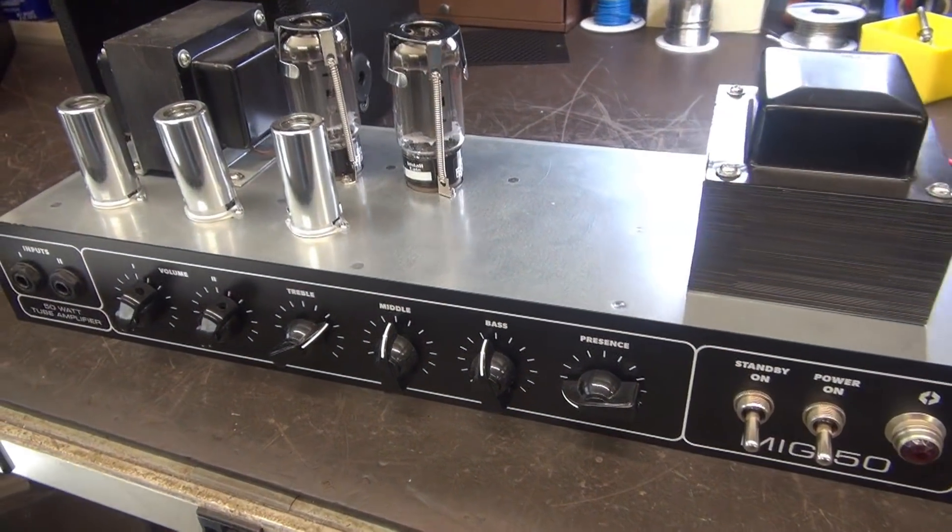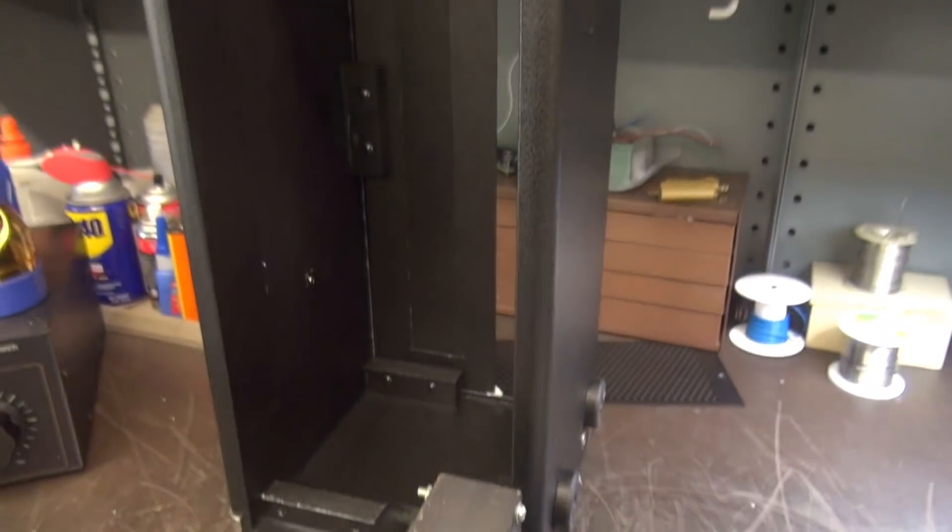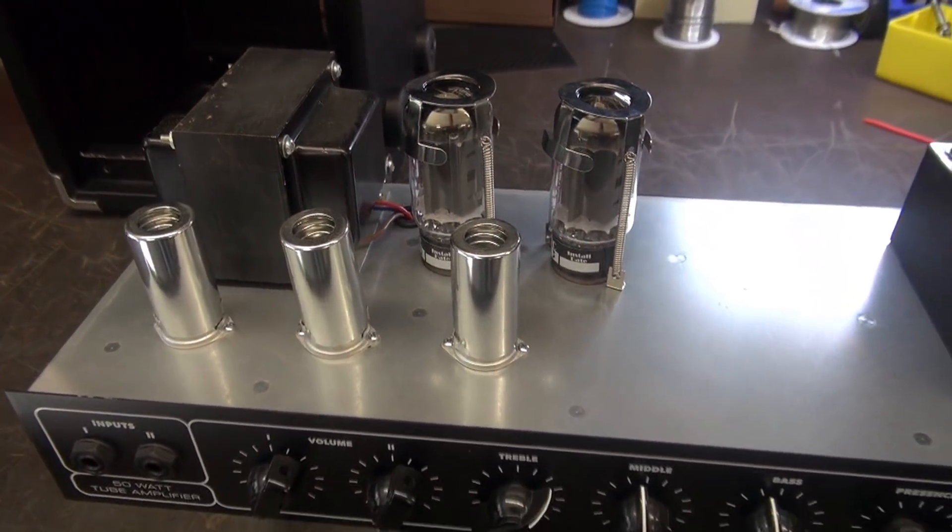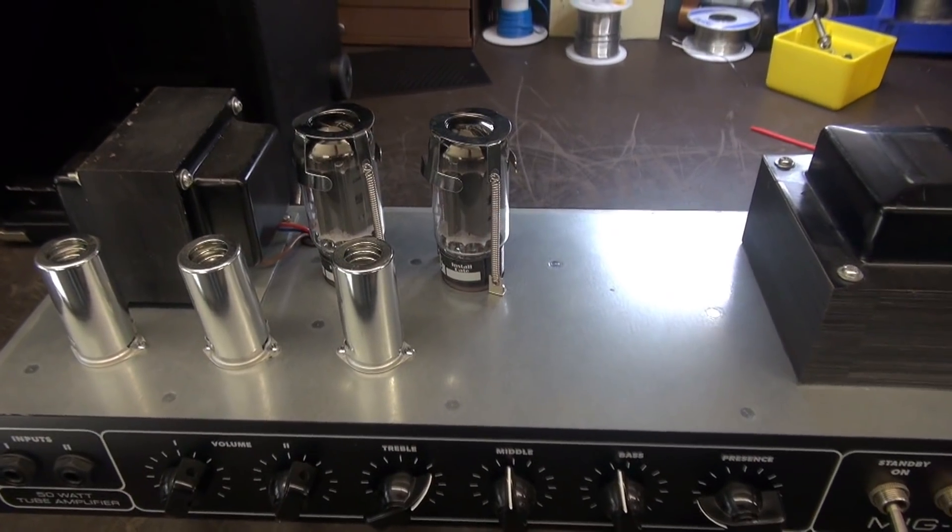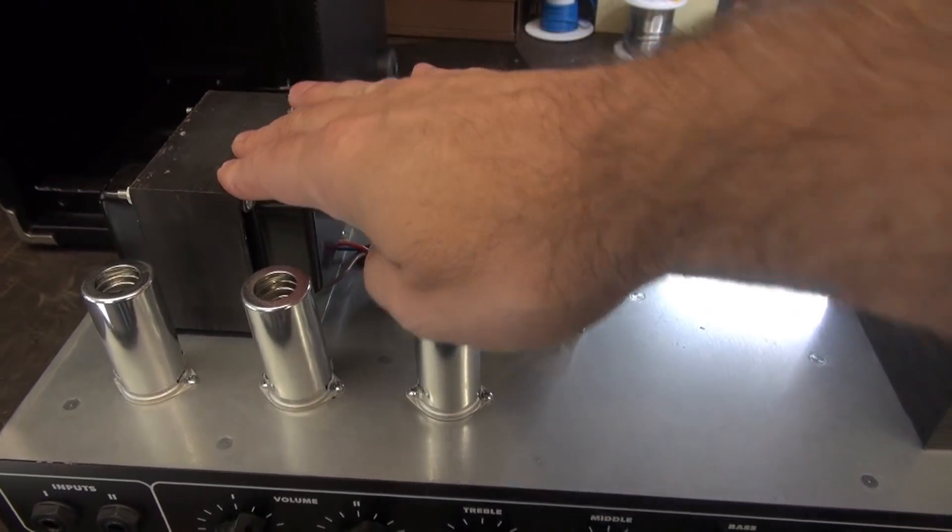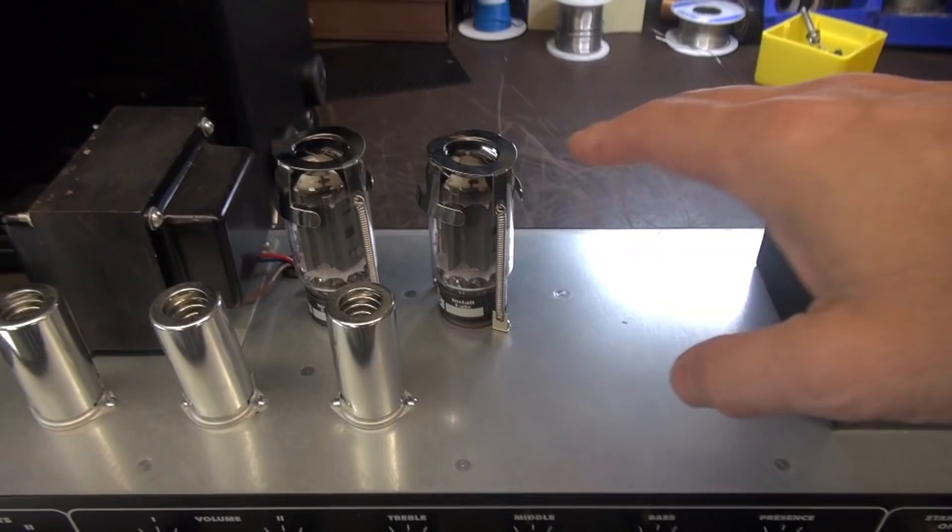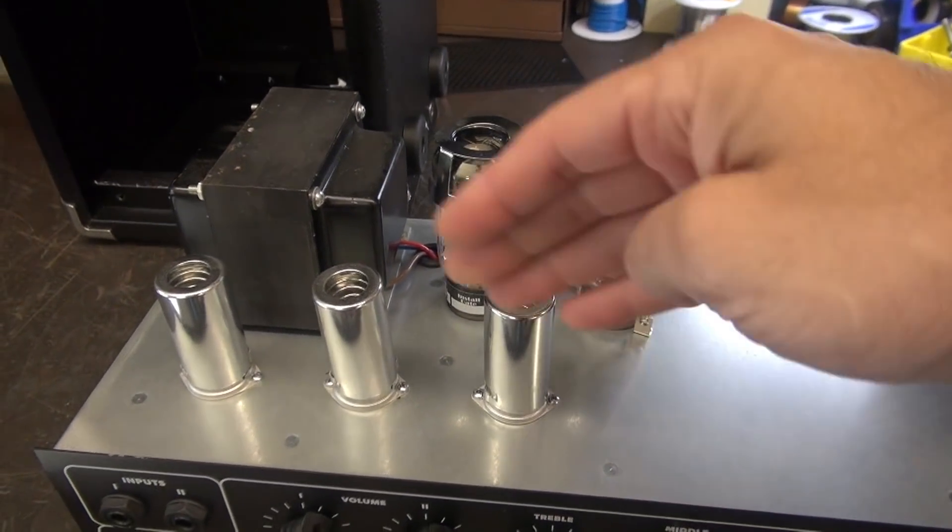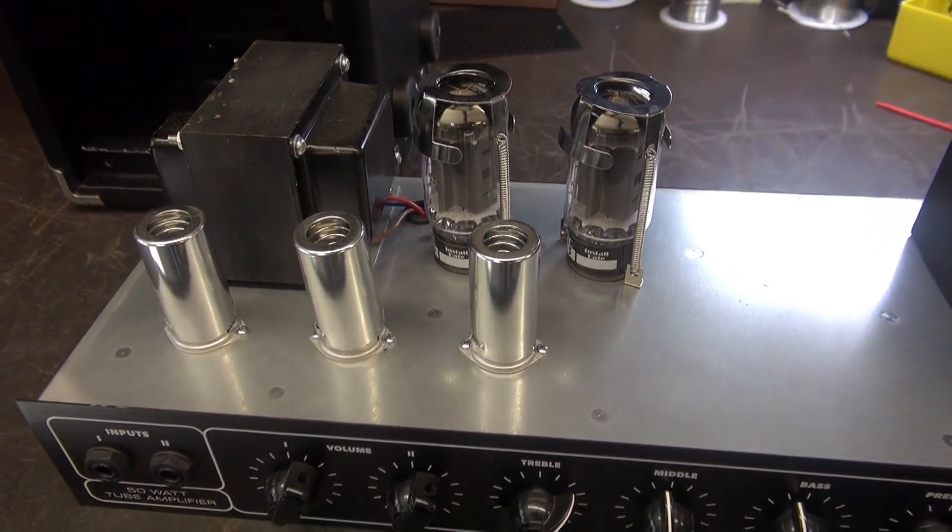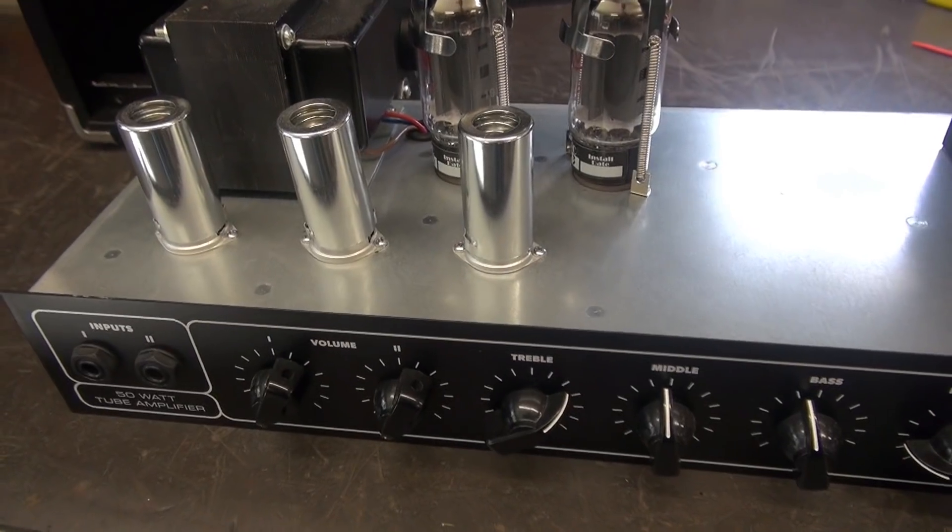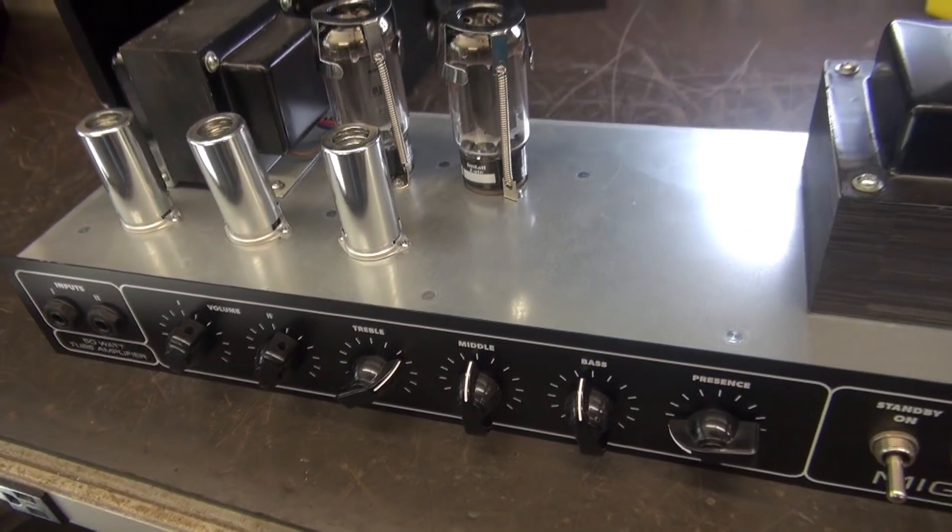Here's the MiG-50 removed from its cabinet for initial inspection. Looks like a pretty well-built unit. Large output transformer and power transformer, pair of 6L6s, three 12AX7s. A nice basic clean design. Let's take a look around the back.